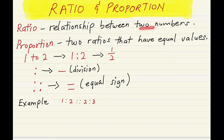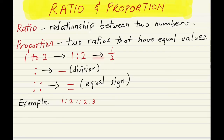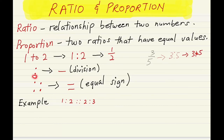Ratio is the relationship between two numbers, and proportion is two ratios that have equal values. I want you to note that 1 to 2 can be expressed as 1 is to 2 — written with two dots — and it can also be expressed as a fraction: 1 over 2. Similarly, 3 out of 5 can be expressed as 3 is to 5, also written as 3:5.